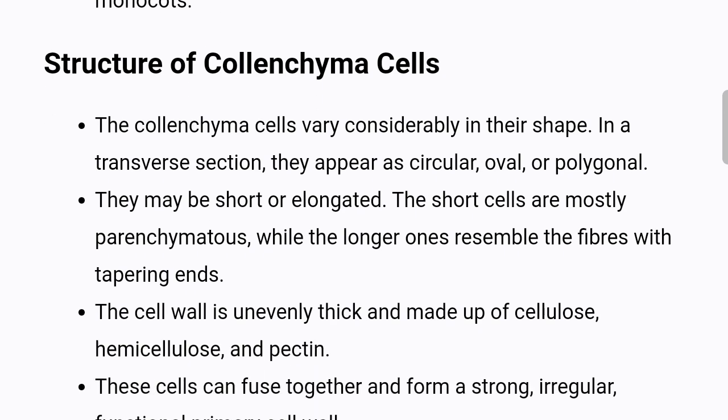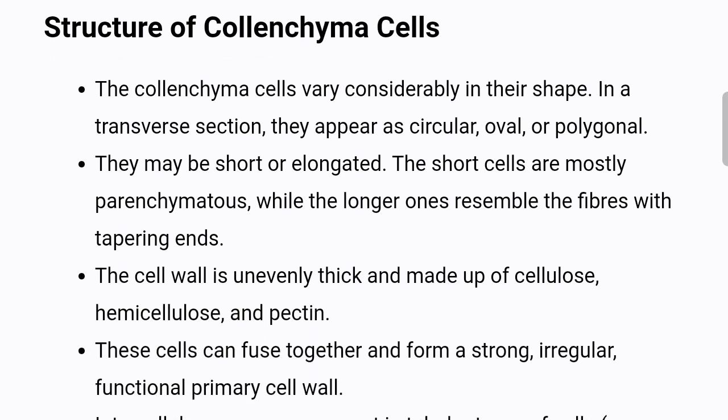Structure of collenchyma cells: The collenchyma cells vary considerably in their shape. In a transverse section, they appear as circular, oval, or polygonal. They may be short or elongated. The short cells are mostly parenchymatous, while the longer ones resemble fibers with tapering ends. The cell wall is unevenly thick and made up of cellulose, hemicellulose, and pectin.